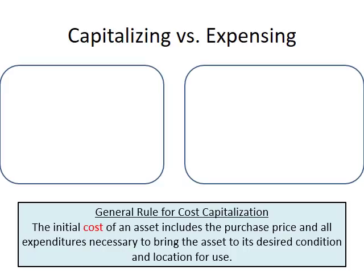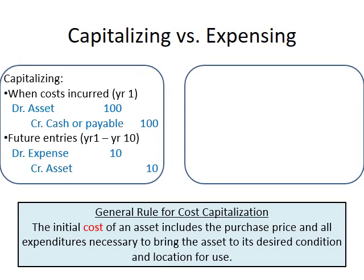According to the matching principle, we should recognize expenses with related revenues in the same period. This $100 can benefit us over the following 10 years, so we should recognize the expense over the next 10 years. In year one when the cost is incurred, we first capitalize this $100 as an asset — a resource that can benefit us in future years. We debit asset $100 and credit cash or payable $100.